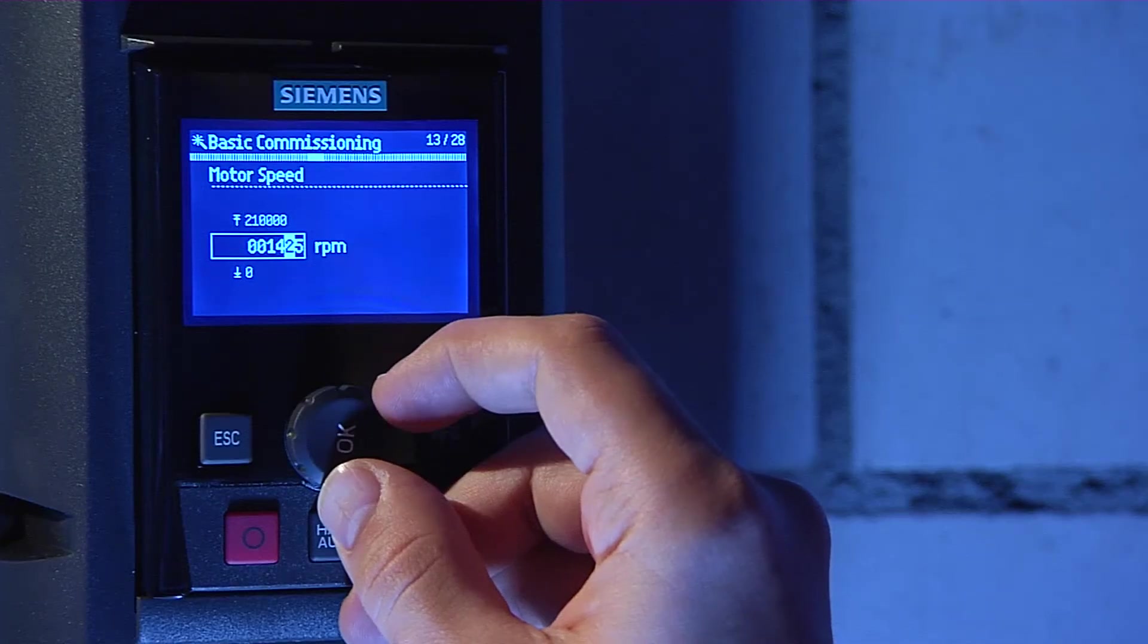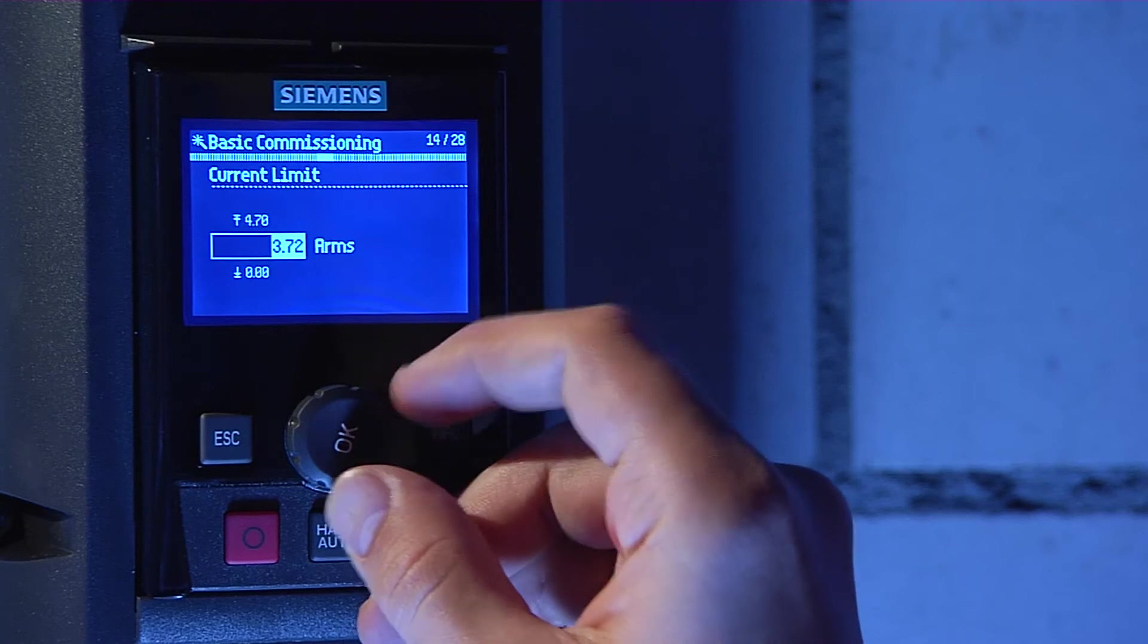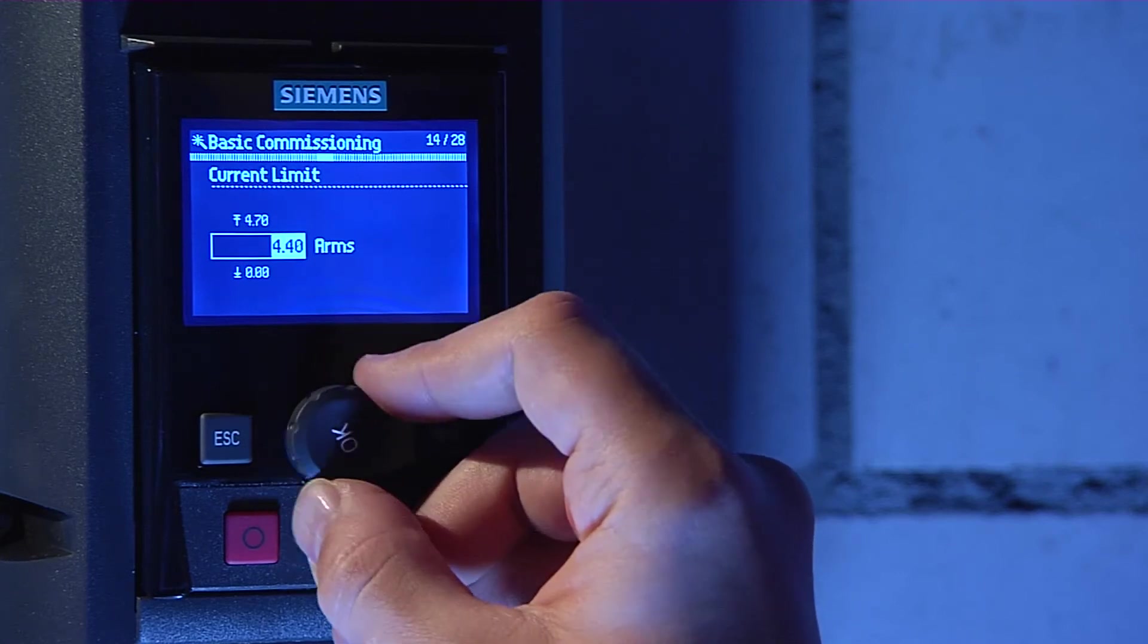Enter the nominal motor speed from the rating plate. The current limit is suggested according to the rated motor current you have entered before.